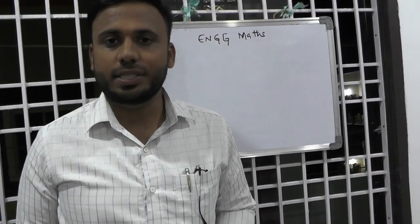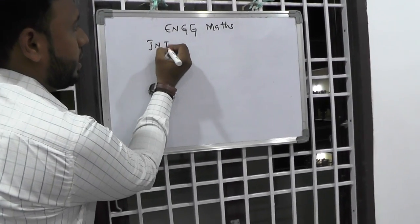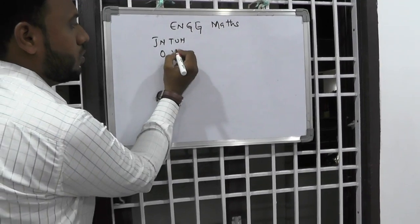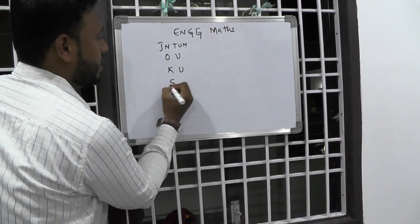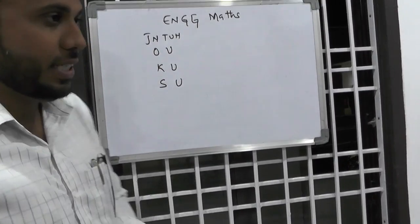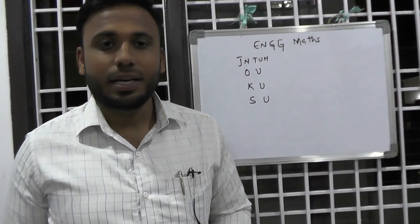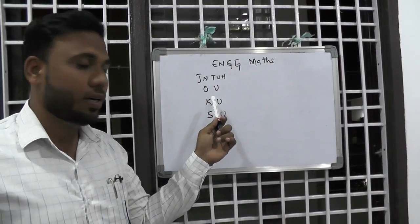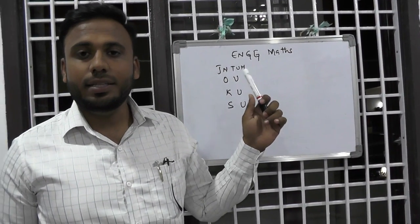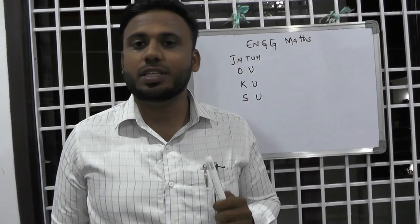In our Telangana, there are so many universities like JNTUH, OU, KU, and SU. In all these universities, mathematics is mandatory. Coming to JNTUH, Osmania University, and Kakatiya University, in all of these, engineering mathematics is playing a major role for the students.